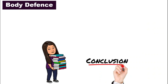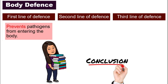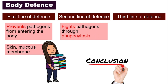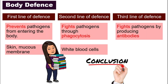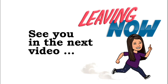Let's take a look at a simple summary of all three lines of defense. The first line of defense: we prevent the pathogens from entering the body, with the important elements being our skin and mucus membrane. The second line of defense: we fight through the process of phagocytosis by white blood cells. The third line of defense: white blood cells produce antibodies to fight the pathogens — the important element here is the antibody, and it is your body's immune system. That's all from Jeku Teoh in this video. I shall see you in the next video soon. Bye.